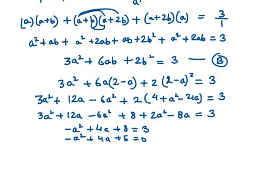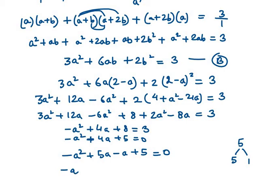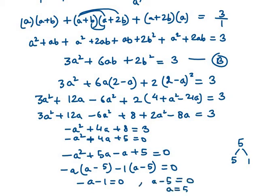This is a quadratic equation. We split the middle term to factor it: minus a² plus 5a minus a plus 5 equals 0. Taking common factors: minus a(a minus 5) minus 1(a minus 5) equals 0, giving (minus a minus 1)(a minus 5) equals 0. So the two factors give a equals minus 1 or a equals 5.